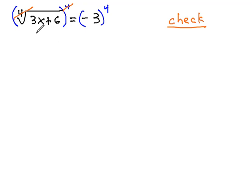Fourth power and fourth root clears, leaving us with 3x plus 6 equals negative 3 to the fourth is 81.